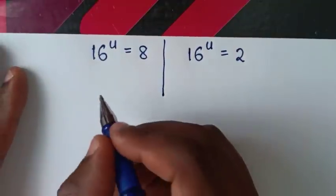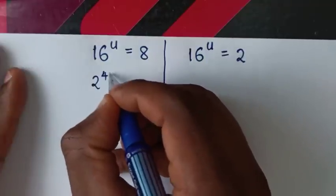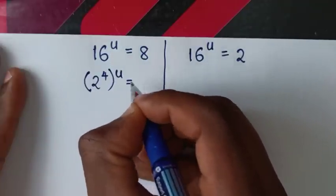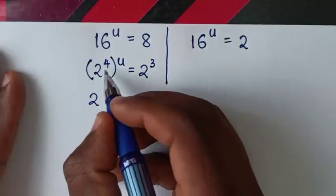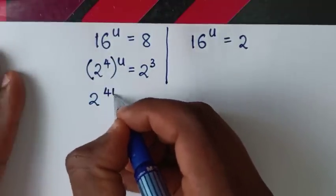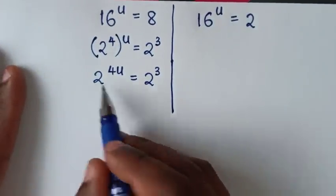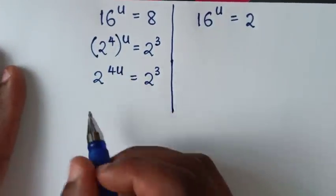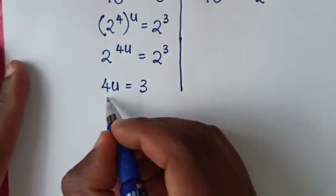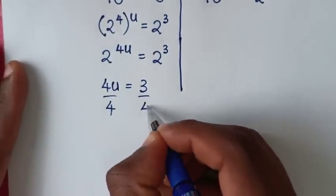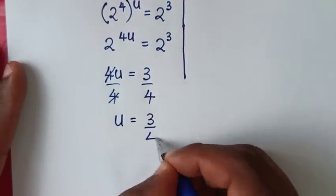From the first solution, we'll express both sides with base 2. 16 is the same as 2 power of 4, so (2^4)^u equals 8, which is 2 power of 3. It will be 2 power of 4u equals 2 power of 3. Since we have the same base of 2, we compare the powers: 4u equals 3. Dividing both sides by 4, u equals 3 over 4.